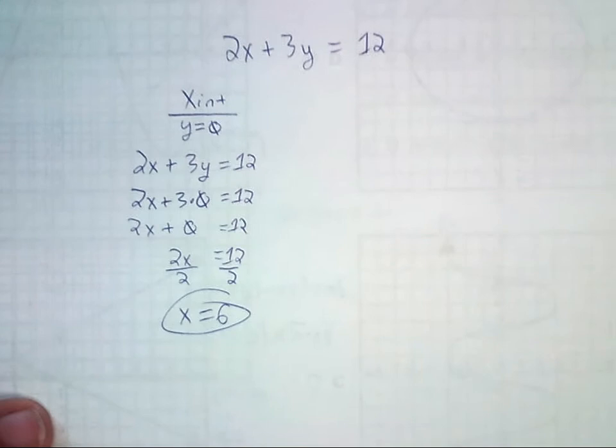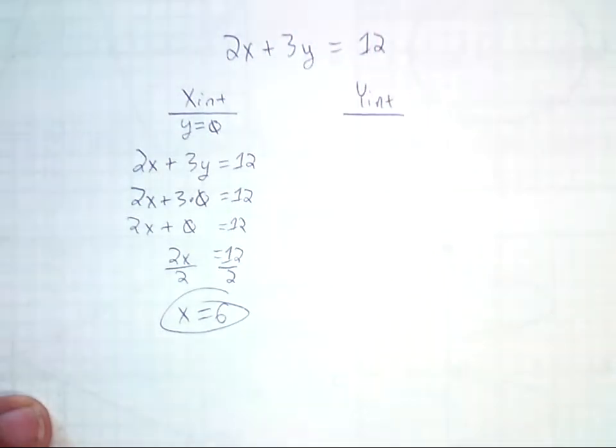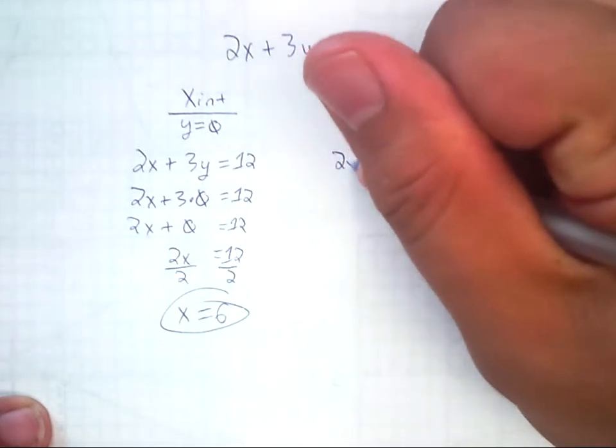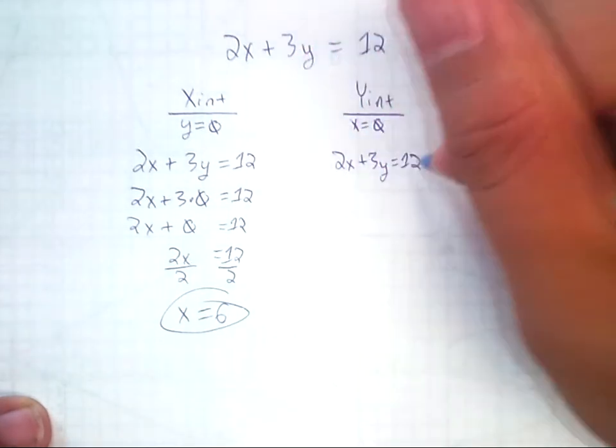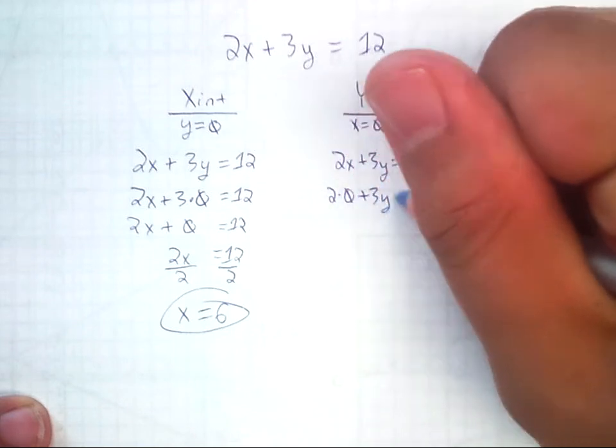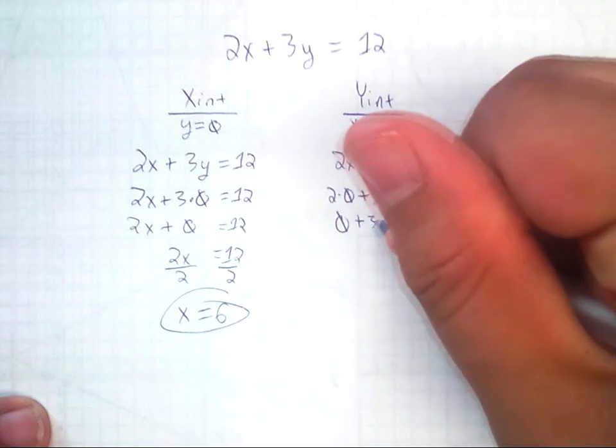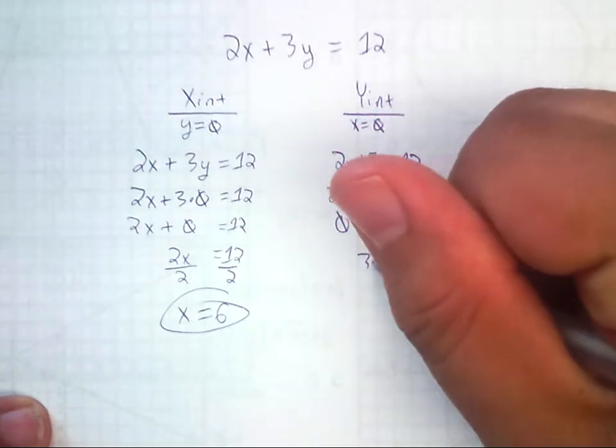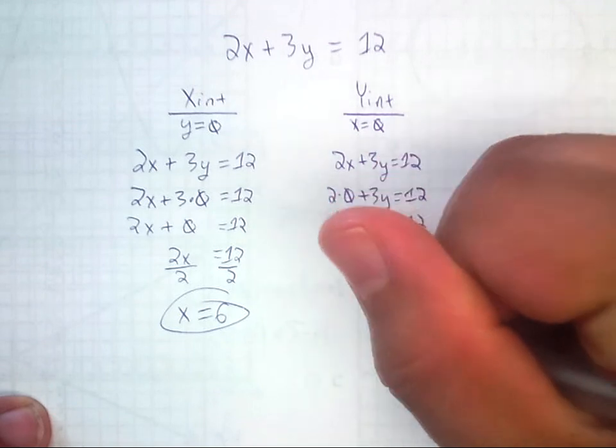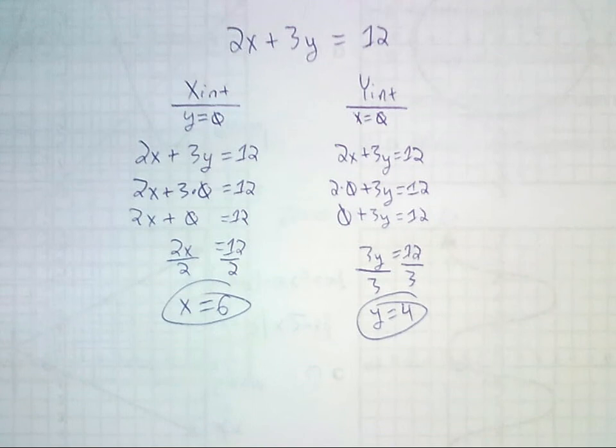Now we do the same thing with the y-intercept. Instead of y equals zero, we just do the opposite. x equals zero. So, again, start with the problem. 2x plus 3y equals 12. I'm going to replace x with zero this time. So equals 12. I'm just going to clean it up. 0 plus 3y equals 12. So we get 3y equals 12. If I divide both sides by 3, y equals 4. So that's an algebraic way to do your x and y-intercepts.